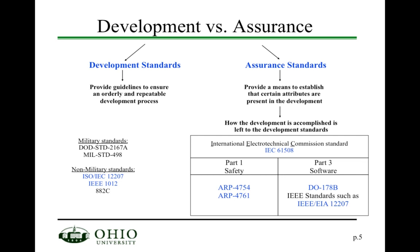We're going to break standards down into two different types. On one end we have development standards, which provide guidance to ensure that you follow an orderly and repeatable development process — developing a software product or a hardware product. On the other side you have assurance standards, which provide a means to establish that certain attributes are present in a development. The assurance standards tell you what you need to do and what activities you need to perform, while development standards give you more guidance on how to do it.